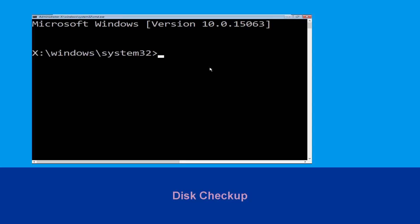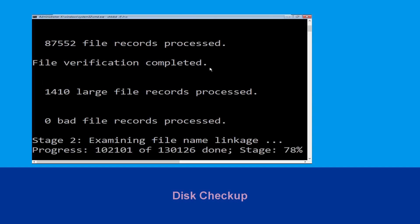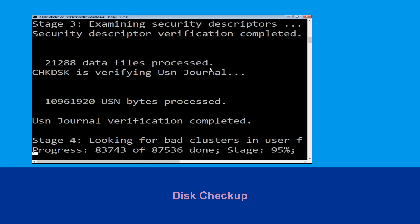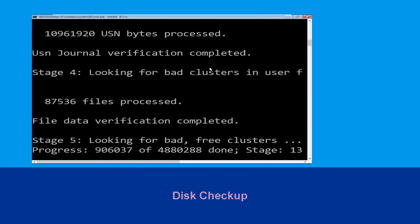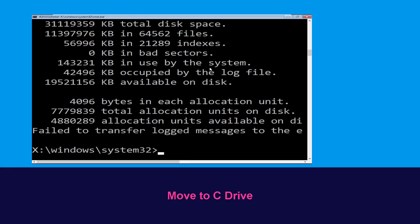It will open a Command Prompt window. Type chkdsk /f /r c: and hit Enter to execute the command. Now wait for some time for the process to complete. Once done, move to the next step. Type c: and hit Enter.